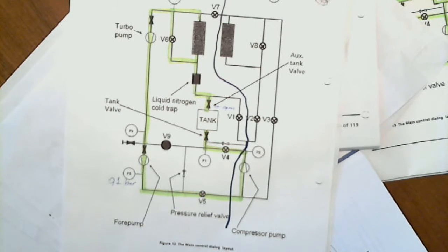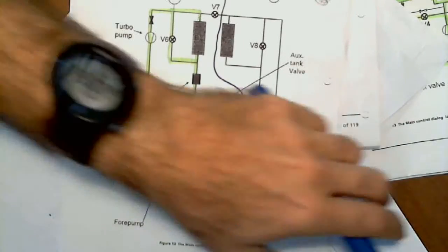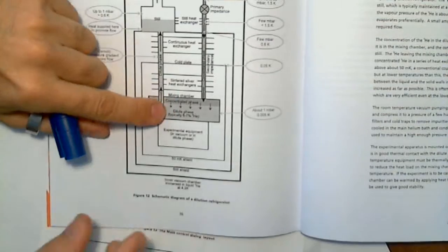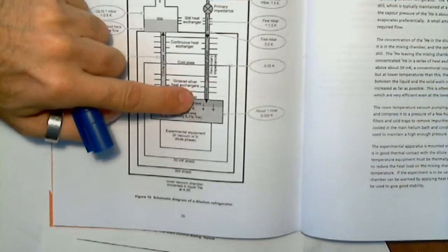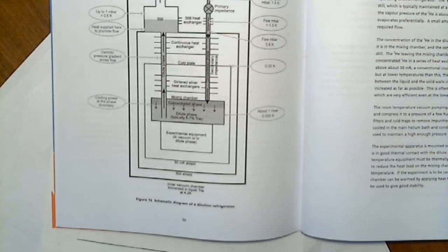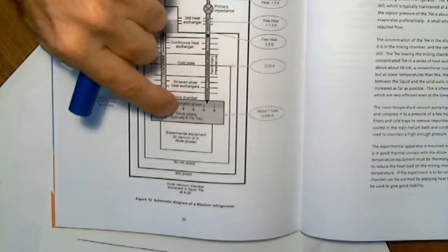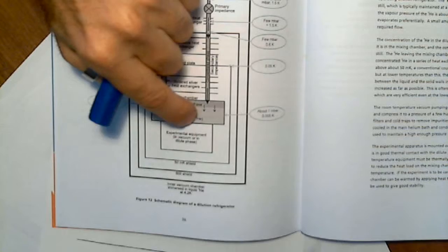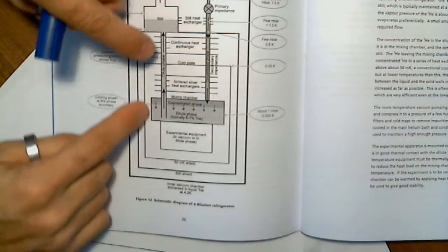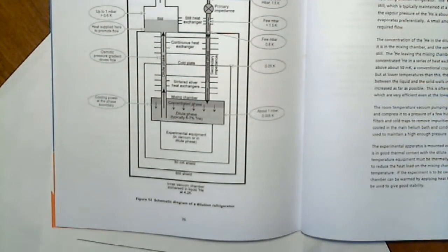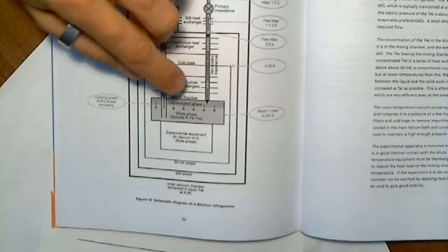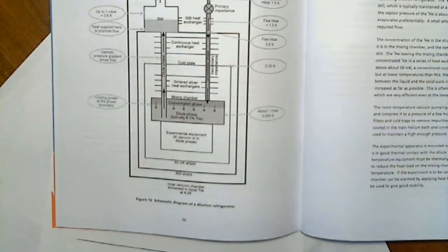Because if you don't have that, you could not have a dilution refrigerator working. Because it's exactly what I showed before with the two phases here. If you have here pure helium-4 and here pure helium-3, nothing will happen. Because I have helium-3 on the bottom a little bit, I can pump the helium-3 out in the helium-4 because you have this vapor pressure from helium-4. And then you have the cooling exactly in this border between helium-3 and helium-4.